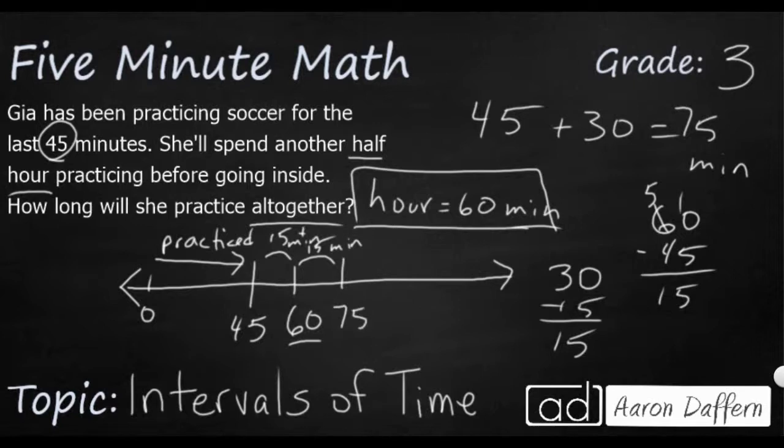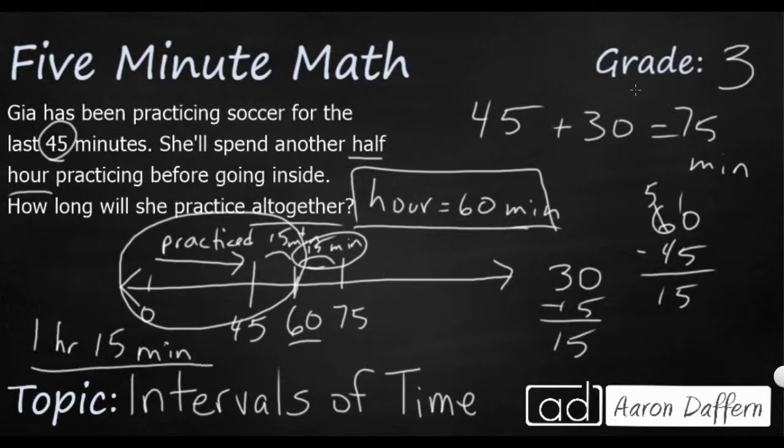But now we can write it a little bit differently. We're going to group all of this together because this is our first hour. And so we're going to say one hour. And then how many minutes over that hour? 15 minutes. And that's probably what you would see on the answer key or the answer choices if you were doing this on a test. Even though one hour 15 minutes is the same as 75 minutes, it's a little bit more proper to go ahead and write it as one hour 15 minutes.